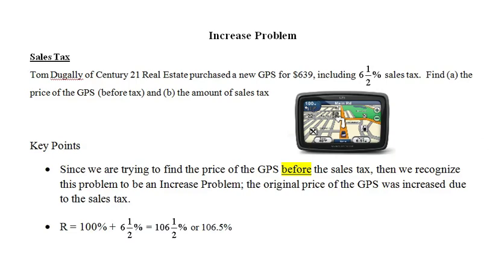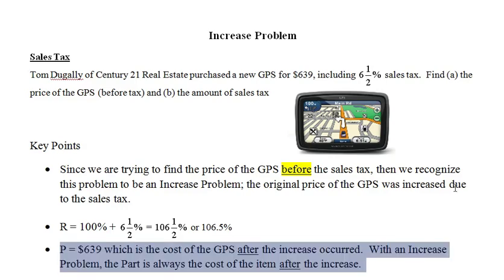So how do we find the rate? We may find the rate by taking 100%, which represents the full amount of the base (the original price), plus 6.5%, which is the percent increase that has occurred, or the percentage by which the original price of the GPS has increased.